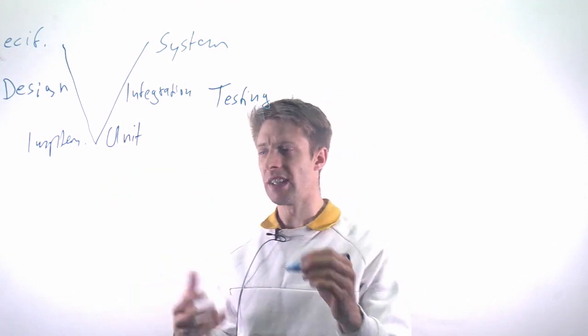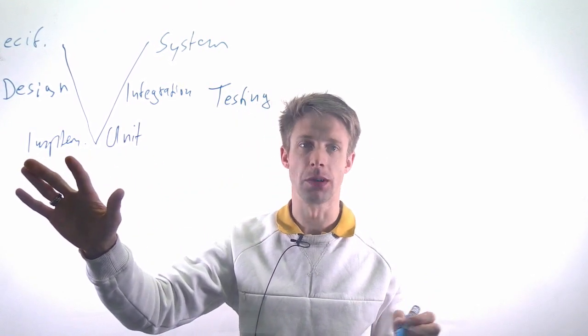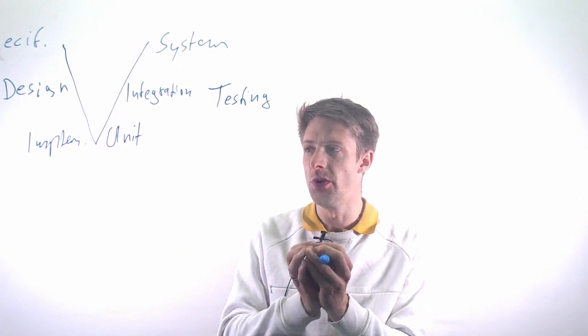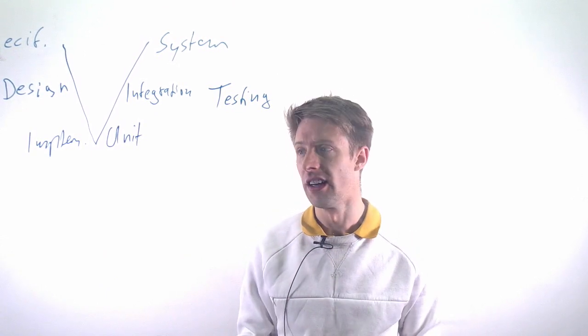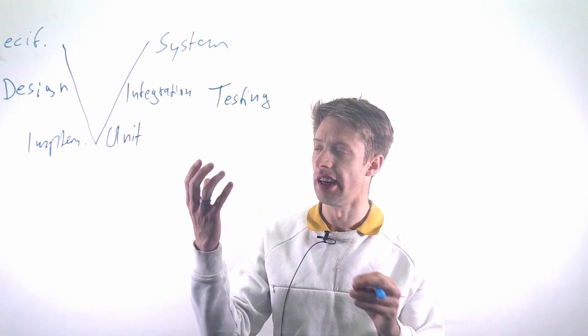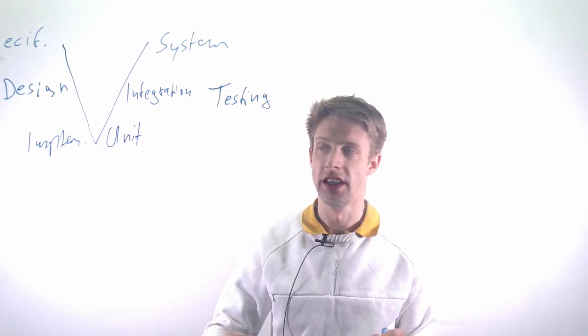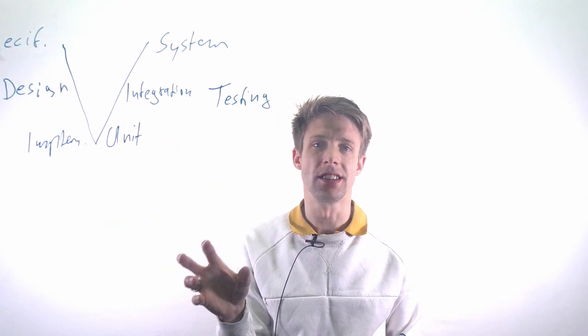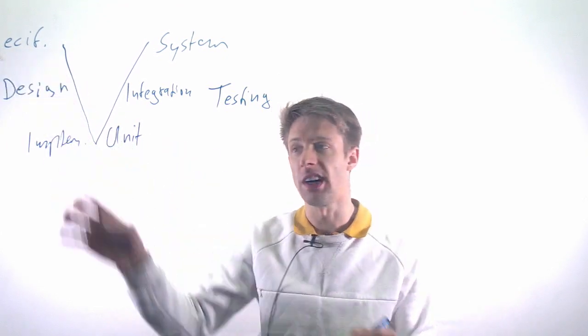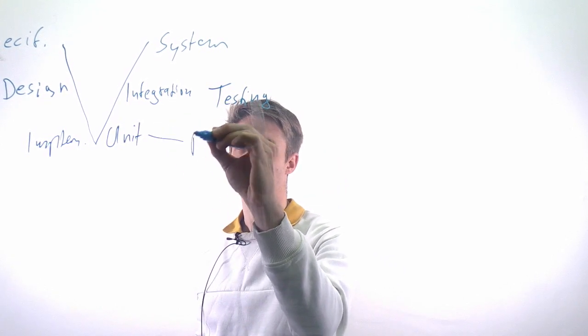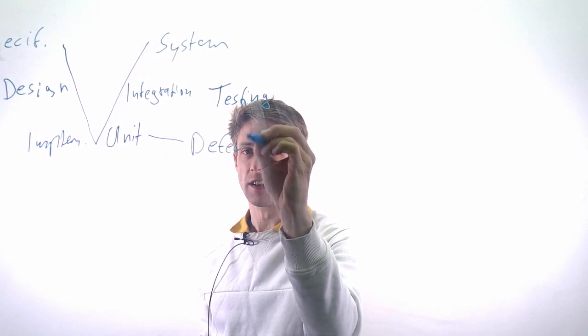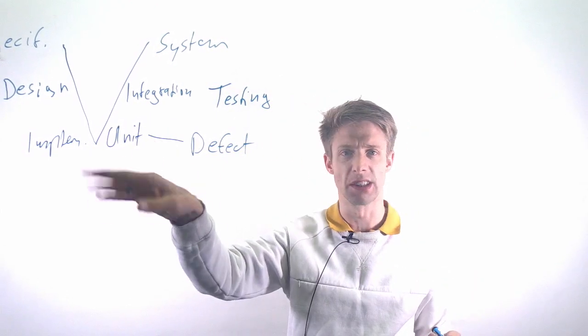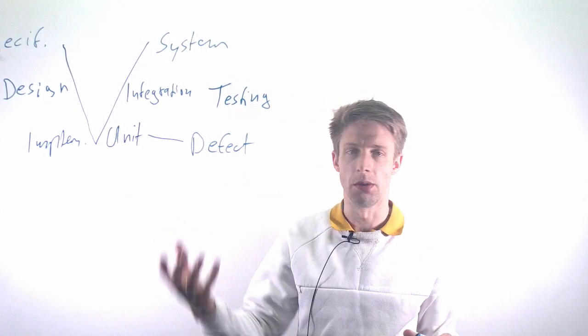So first of all unit testing is looking directly at the implementation activities of a developer, so it's testing a single unit of a system, a small part of the system. For example if you are in an object-oriented language it could be a class, for instance. And since units, these small parts, usually do not fulfill any requirements, the main focus of unit testing is defect testing. So you try to cover as many cases as possible in order to expose errors, anomalies and so on.